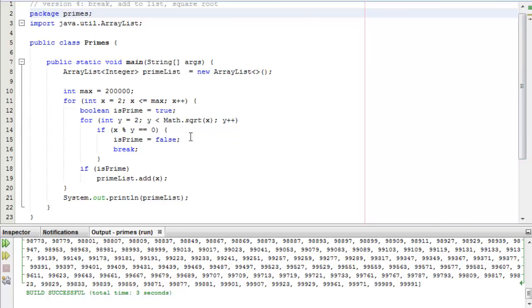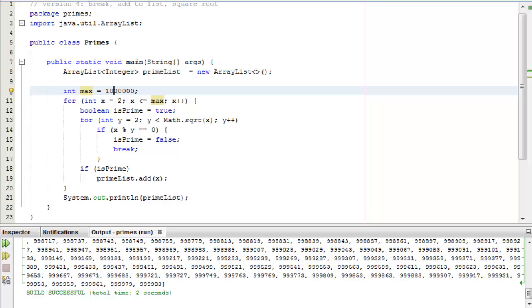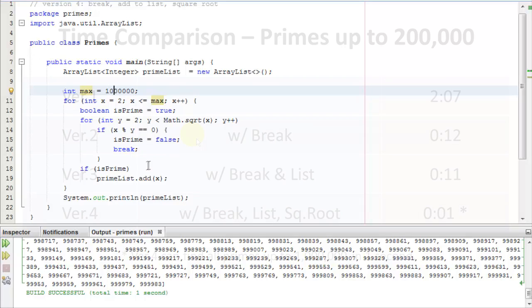And here's our final version of the code. And the only change we really made here is the square root. We added math square root of x instead of just x. And let's see, let's run that up to 200,000. No, let's just run it up to a million and see how it does. I think it can do it. So we're going to run this up to a million and see what it does. So it did it in one second. So it calculated all the prime numbers up to a million in just one second.